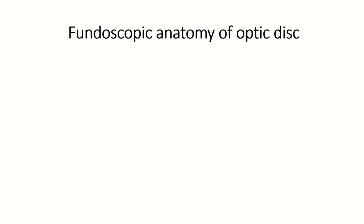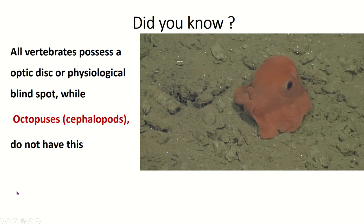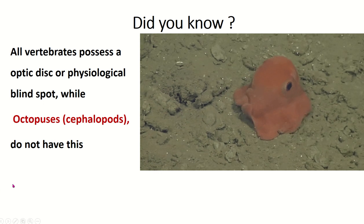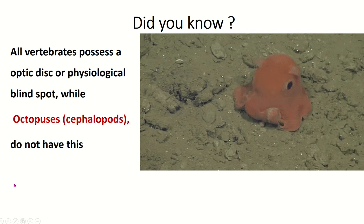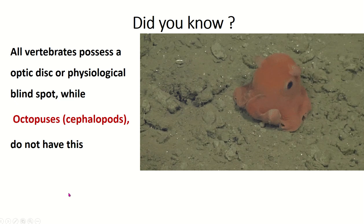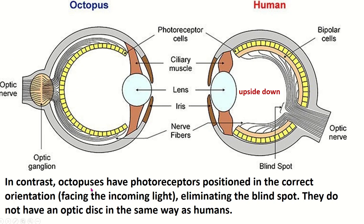Ophthalmoscopic anatomy of the optic disc. Did you know all vertebrates possess an optic disc, or physiological blind spot, while octopuses do not? In contrast, octopuses have photoreceptors positioned in the correct orientation facing incoming light, eliminating the blind spot. They do not have an optic disc in the same way as humans.